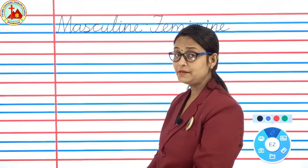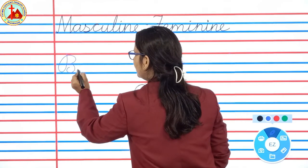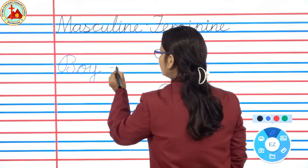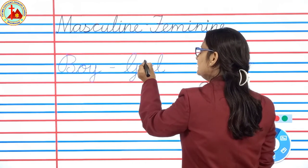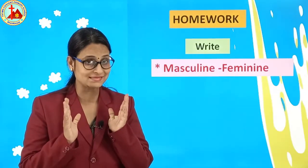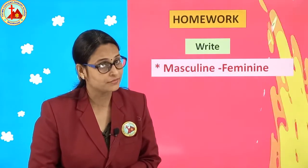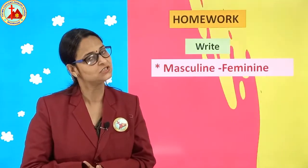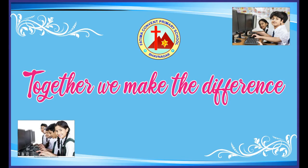Last example is boy. B-O-Y. Boy. Girl. G-I-R-L. Girl. Boy, girl. So children, I hope you understood this concept — masculine and feminine. Homework: write masculine and feminine. These words I will give in your WhatsApp group. Write these words in your general English fair book. Thank you, bye-bye.